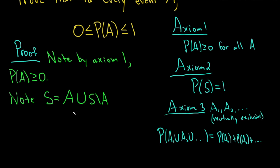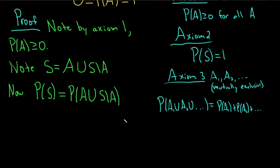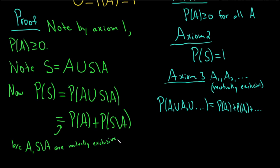So now we have P of S equals P of A union S set minus A. And this is going to be equal to P of A, it's the key step, plus P of S set minus A. And this step here, this is because A and S set minus A are mutually exclusive. So axiom 3 applies. So we're using axiom 3 here with these two mutually exclusive sets to break up this union into two different probabilities.